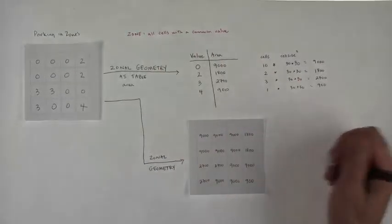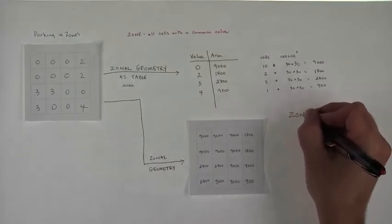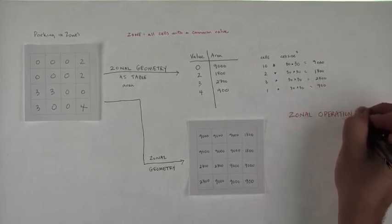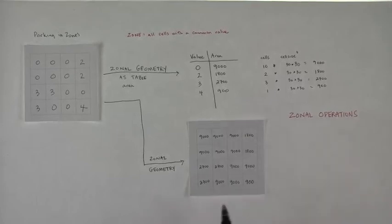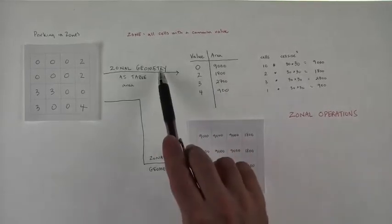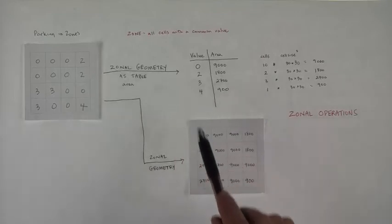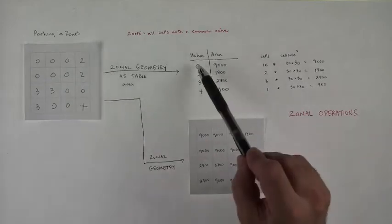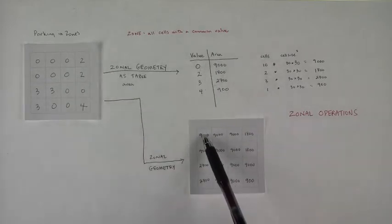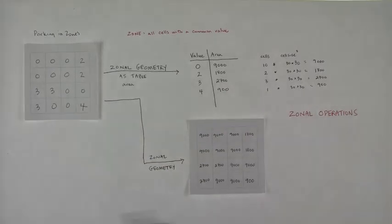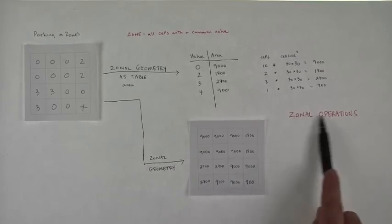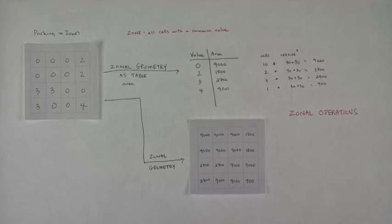That's why this is called zonal geometry. It's also the idea that this tool is part of a family of tools called zonal operations, which differ from local operations. In zonal operations, the function, the thing that happens, is going to be based on the zone or all of the cells that share the same value, not on just the location. That's the kind of all I wanted to tell you about this.